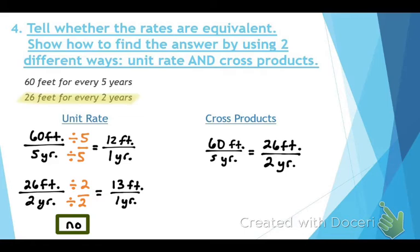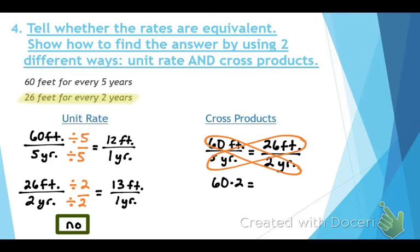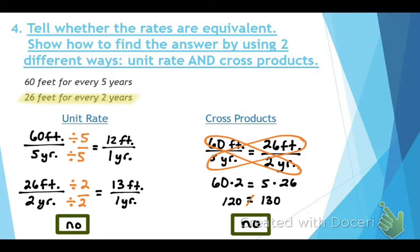Circle diagonally: 60 and two, then five and 26. Drop down the equal sign. On the left side write 60 times two; on the right side, five times 26. That gives 120 on the left and 130 on the right. Those do not equal each other, so the answer is no — not equivalent. This confirms what we found with the unit rate method.